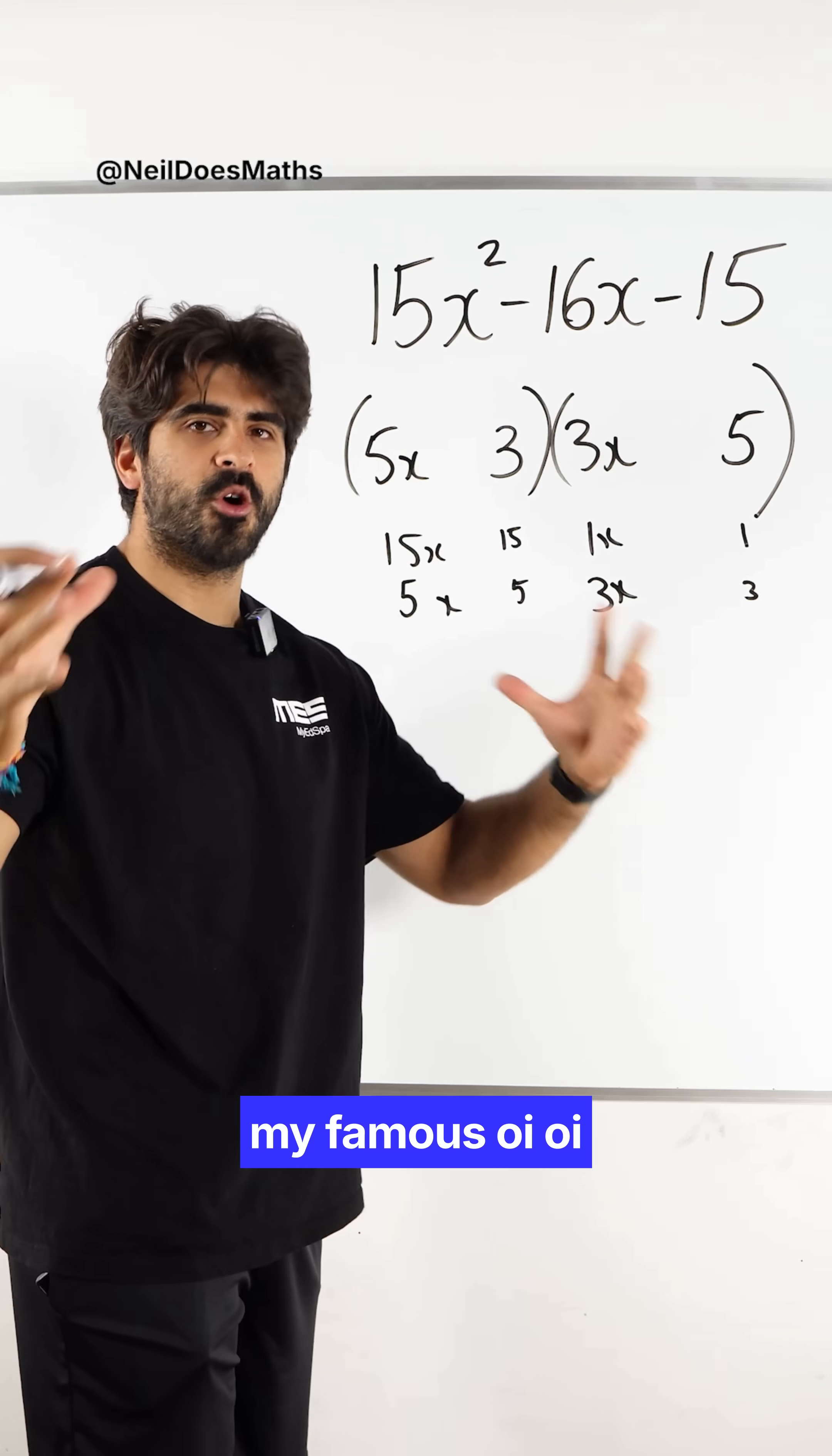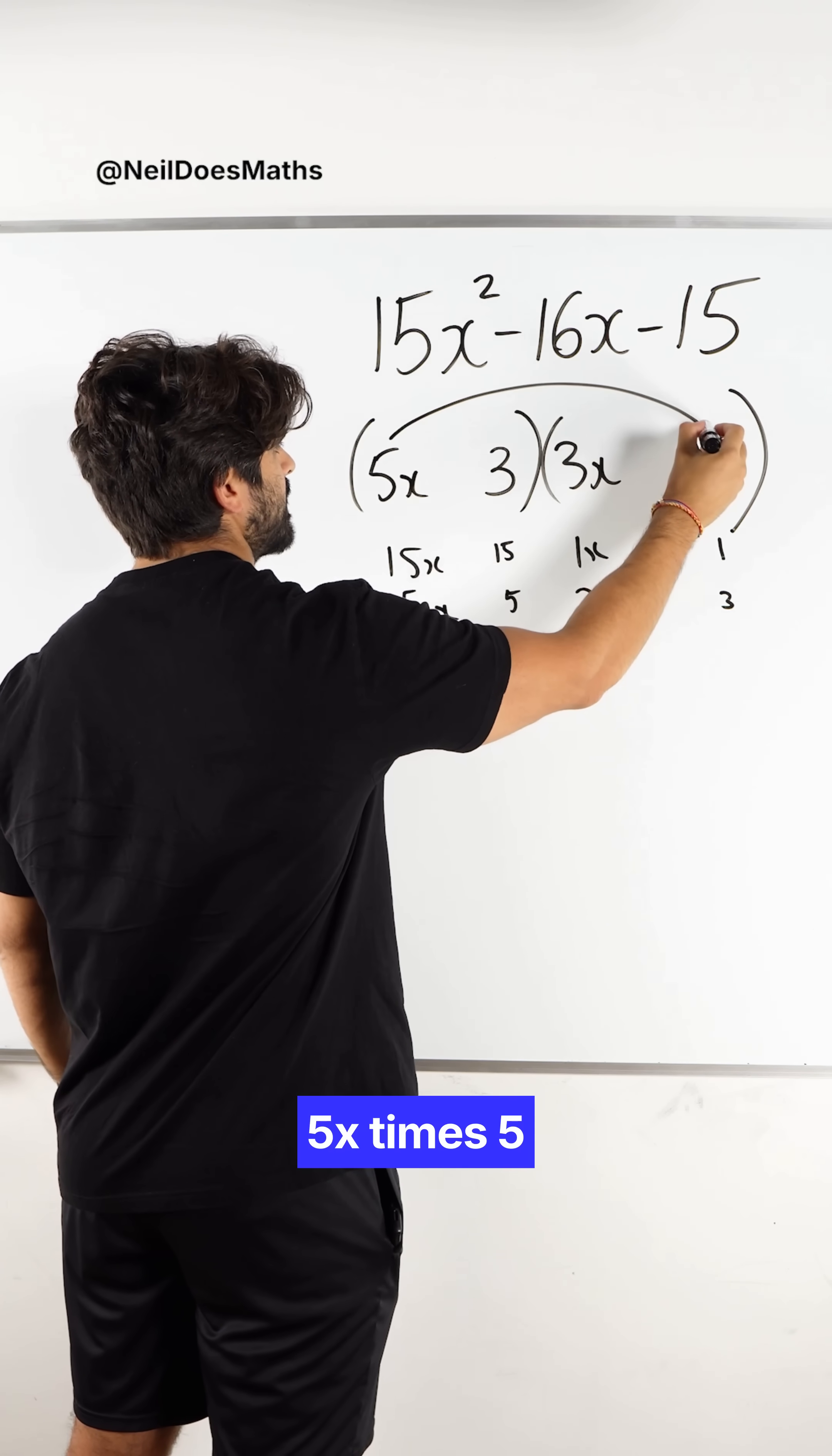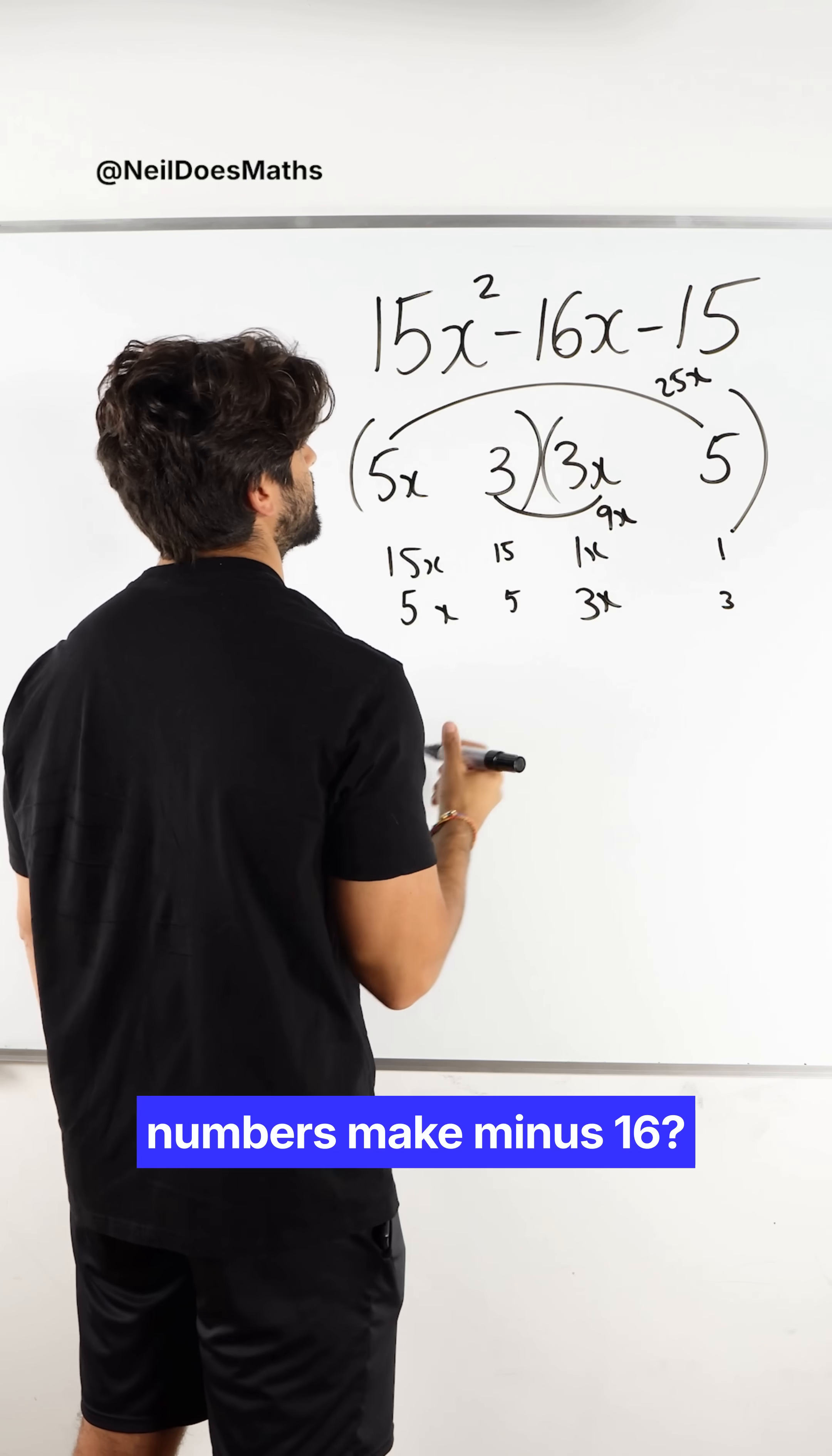And this is where my famous oi oi method comes in. We just need to partially expand and see how it adds to minus 16. 5x times 5 is 25x. 3 times 3x is 9x. How do these two numbers make minus 16?